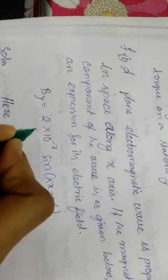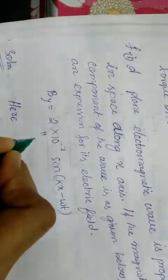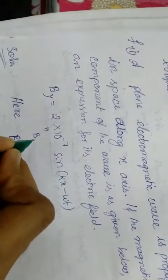If we compare it to the E component, By is equal to 2 into 10 to the power minus 7. E is equal to component 2 into 10 to the power minus 7. If we compare it here,